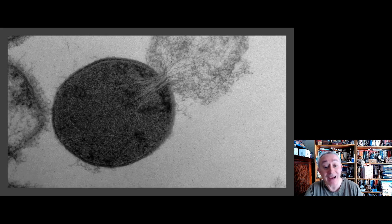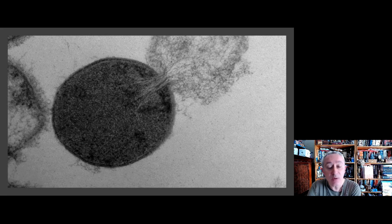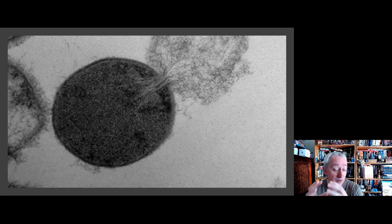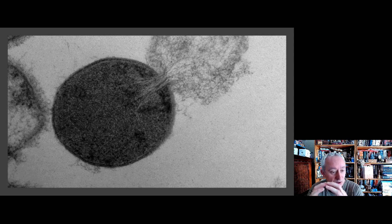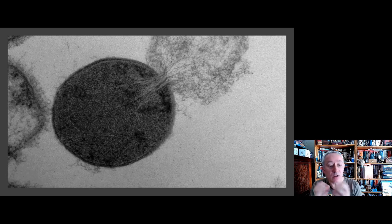Looping back to bacteria, there is another concern. Here we have a bacterial cell undergoing what's called lysis. Lysis is just a fancy word for the membrane around the bacterial cell rupturing and the contents spilling out. This is often what happens when the cell dies or we deliberately try to kill the cell by heat or by chemicals.